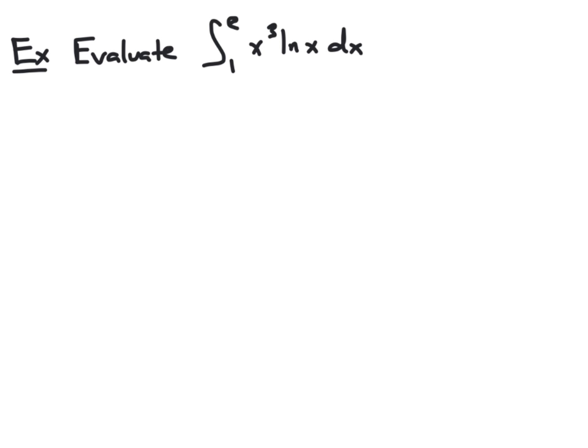The first step here is to choose our u and dv, and here we have no choice. We must let u equal the natural log of x, because the natural log of x is not a function that we can anti-differentiate, and therefore we must have that be the function u, which we can differentiate. This means dv is everything else in the integrand, so x cubed dx.